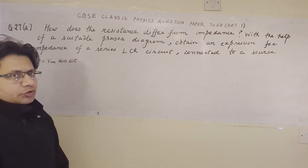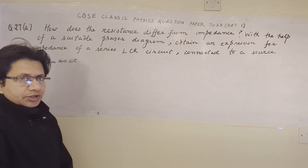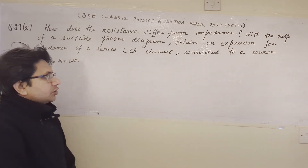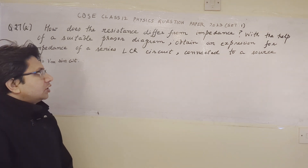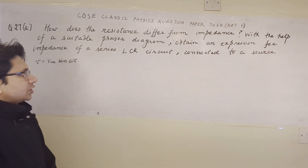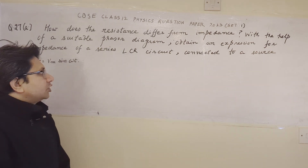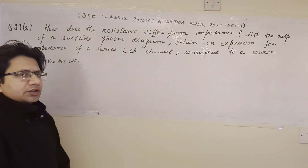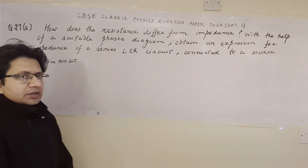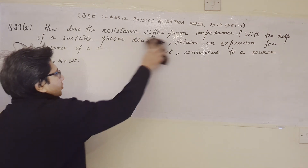Then we have to derive the expression for the impedance of a series LCR circuit energized by a source V equals to Vm sin(ωt). So now let us try to solve this problem.